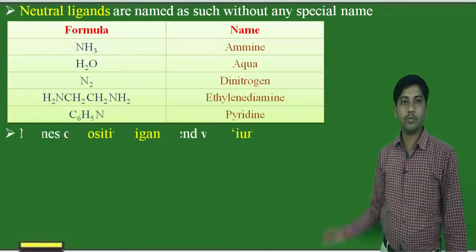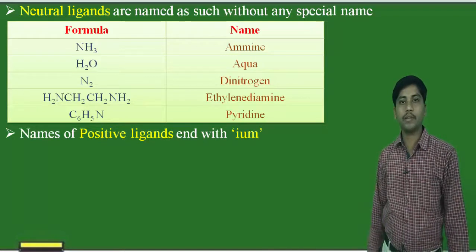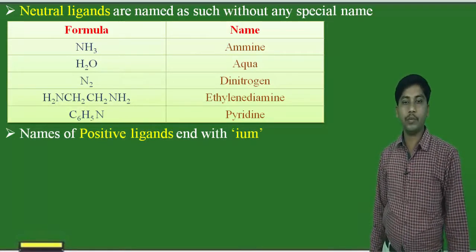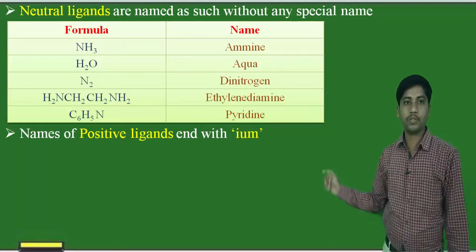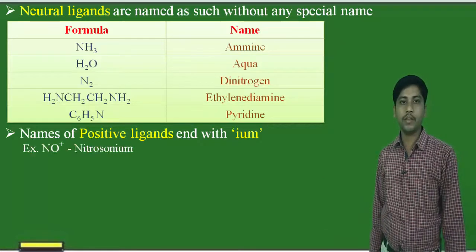Now, the names of positive ligands. Positive ligands are named with the ending 'ium'. For example, NO+ is named nitrosonium.